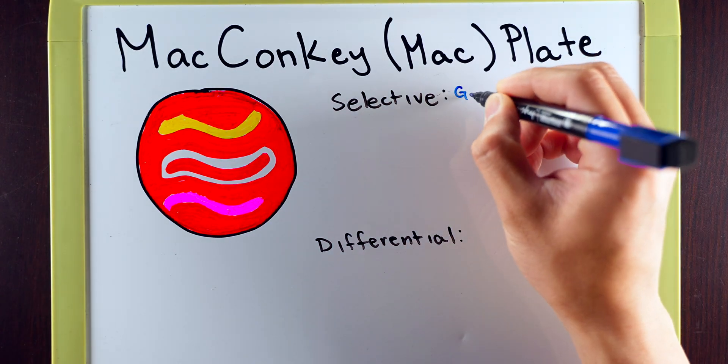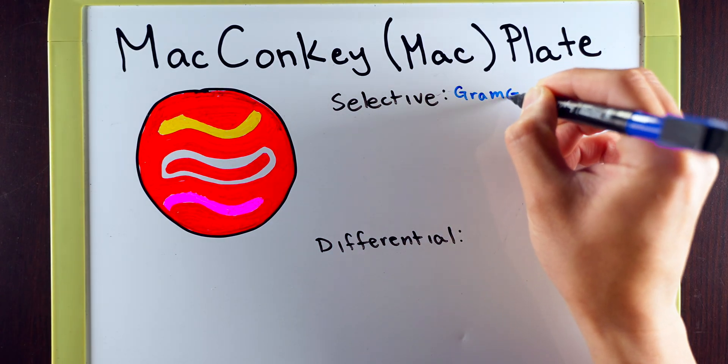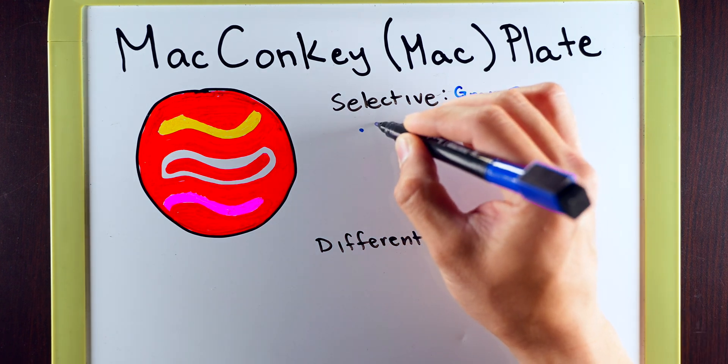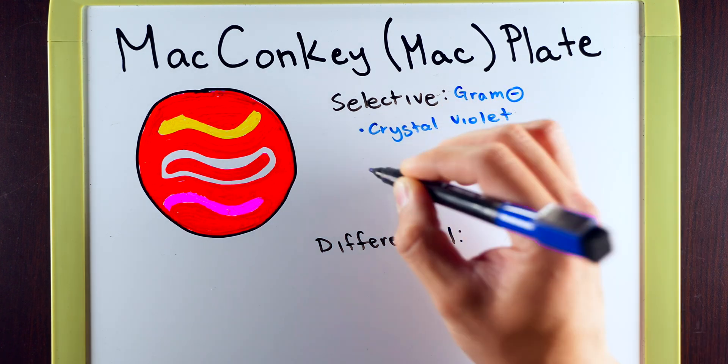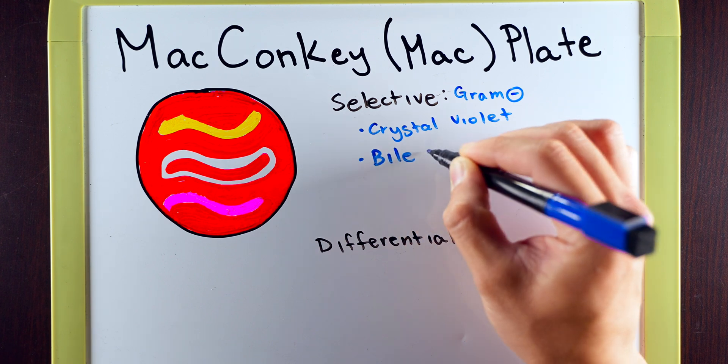The selective portion of the plate allows us to only grow gram-negative bacteria. And the reason why is because the two components in the plate, one is going to be crystal violet and the other is going to be bile salts.